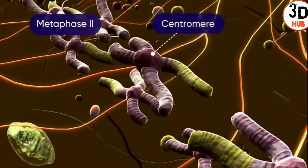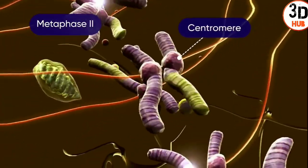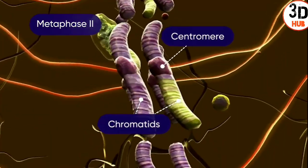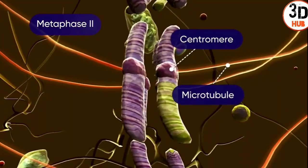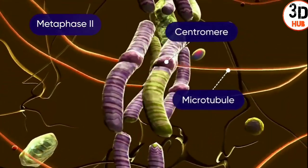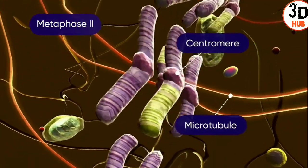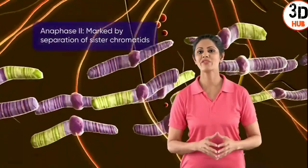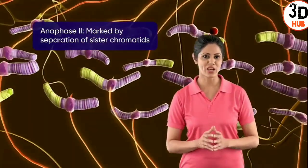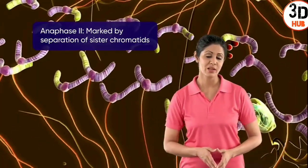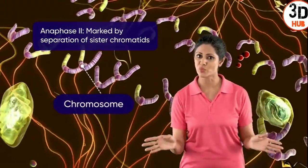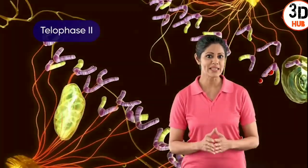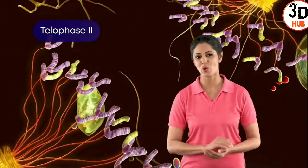The centromere divides into two and each chromosome produces two chromatids. The microtubules of the spindle are seen attached to the centromere of chromosomes. During the next phase, called anaphase 2, by the contraction of microtubules, the chromatids start moving towards opposite poles. In telophase 2, chromatids completely migrate to the opposite poles.